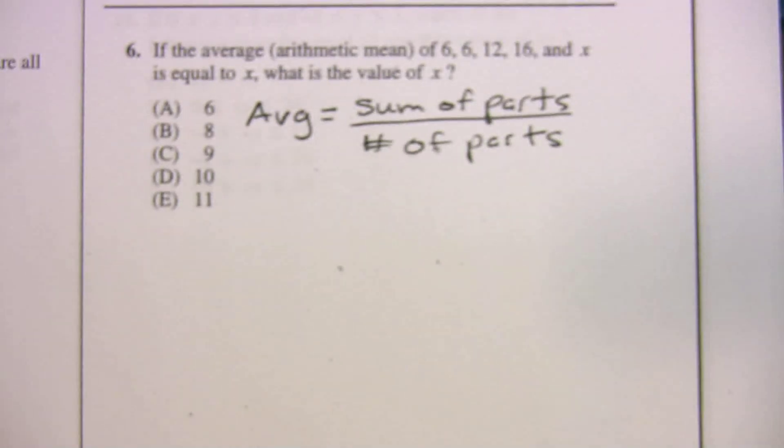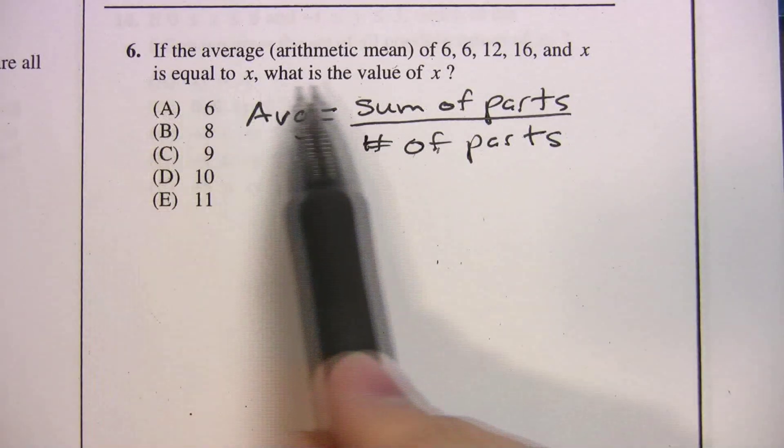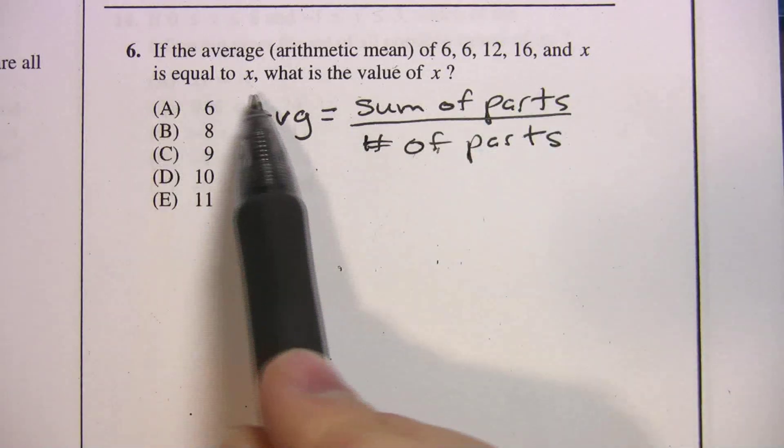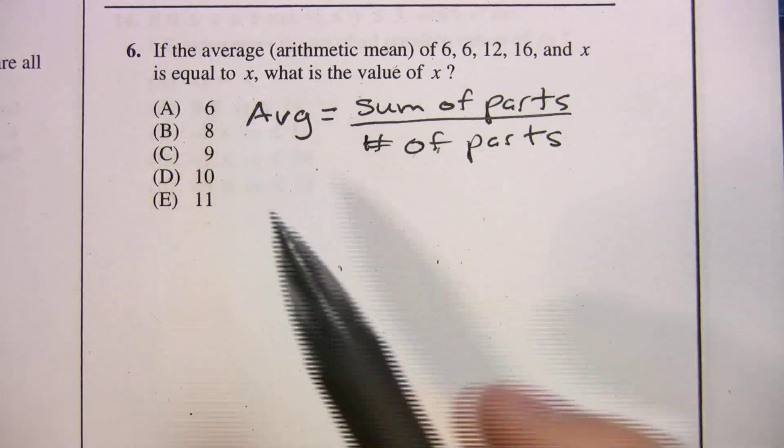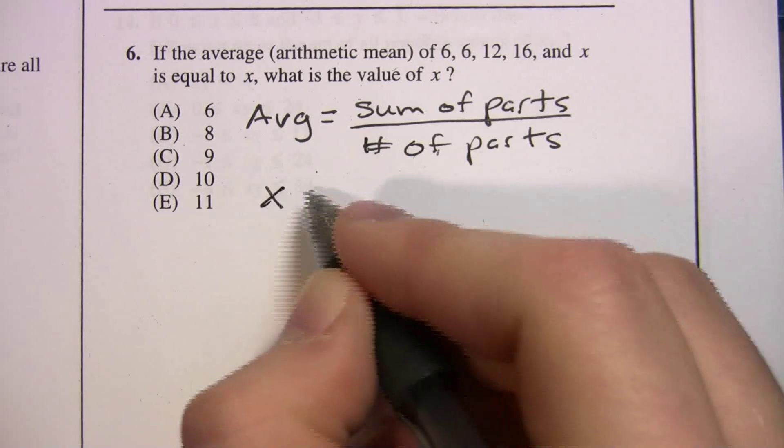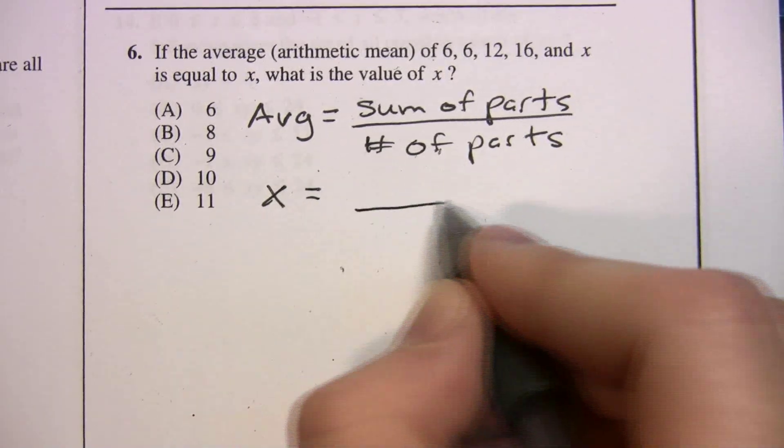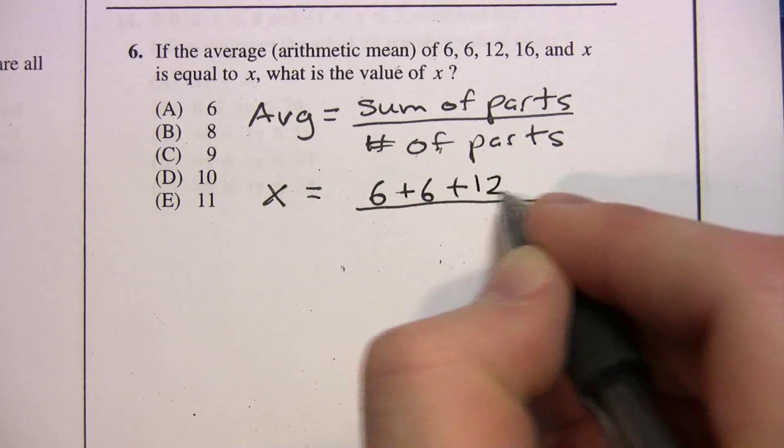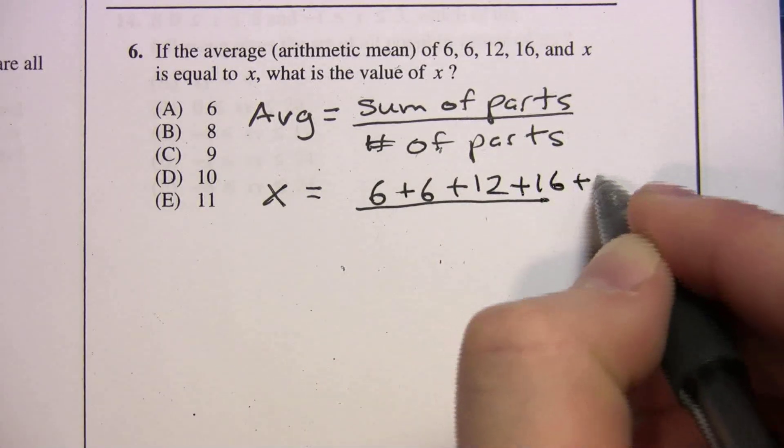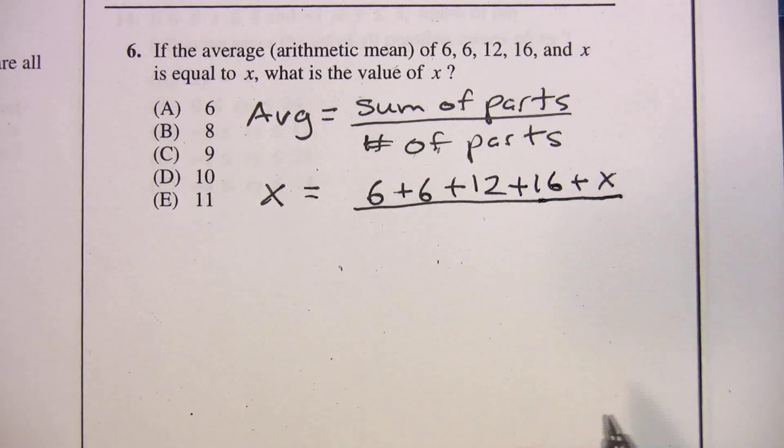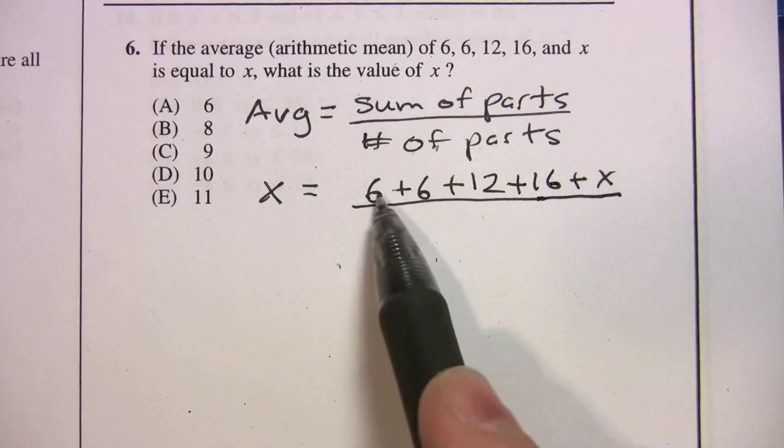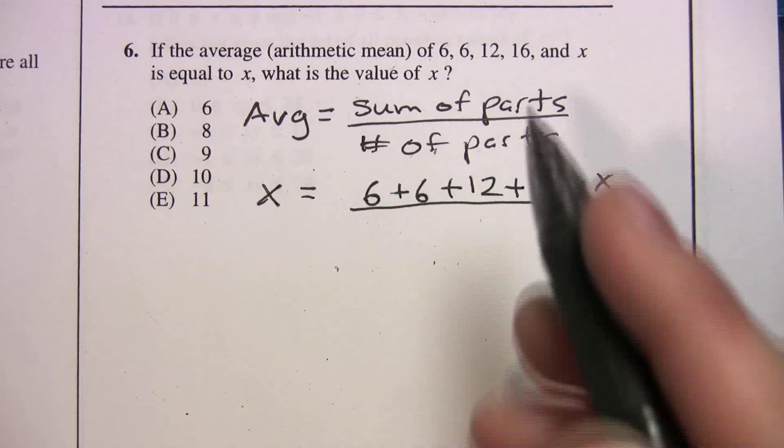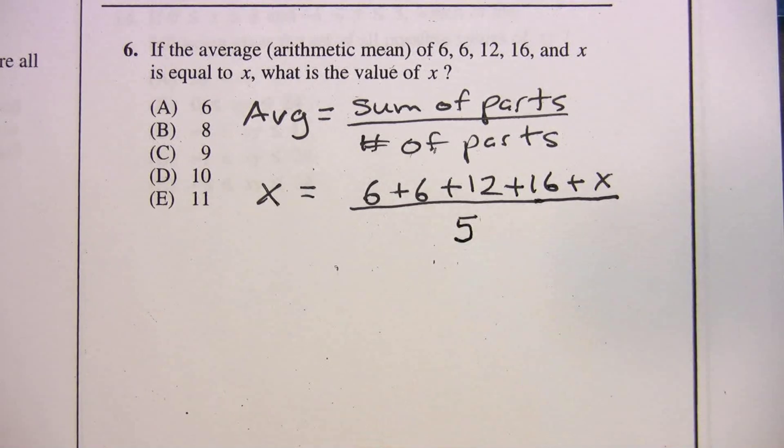So all we're doing is we're plugging in. So it says the average of all this and x is equal to x. So the average is equal to x. Now let's do our sum. 6 plus 6 plus 12 plus 16 plus x. How many things do we have? How many parts? 1, 2, 3, 4, 5.